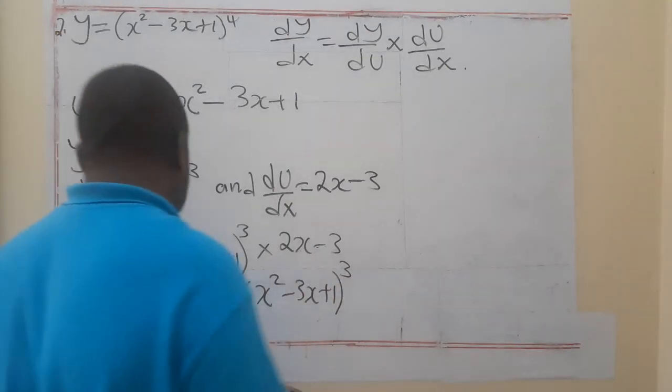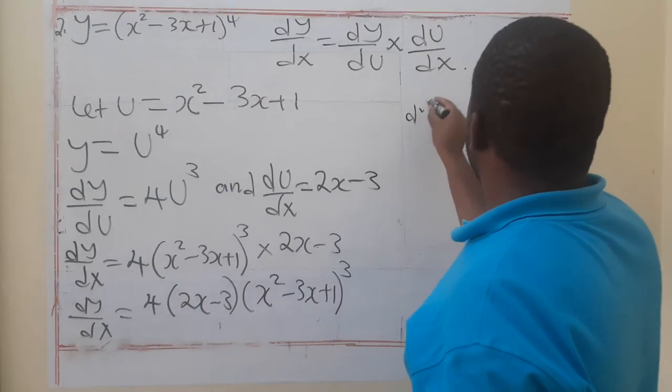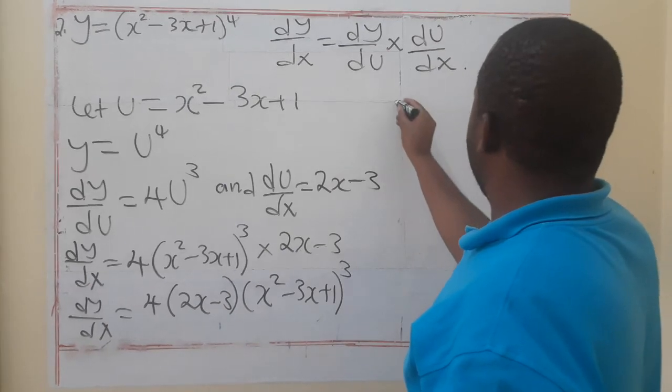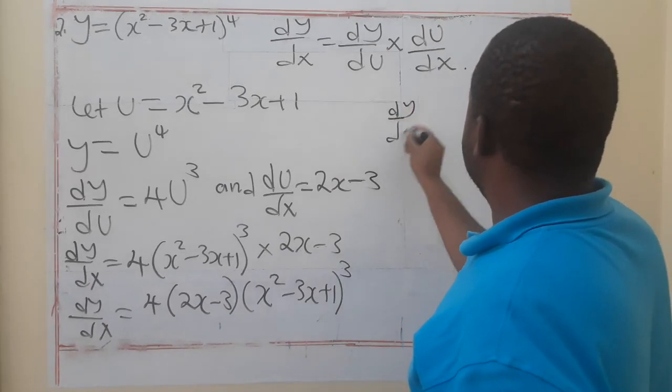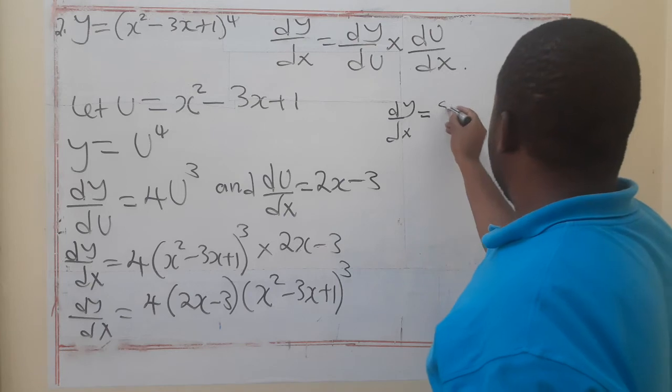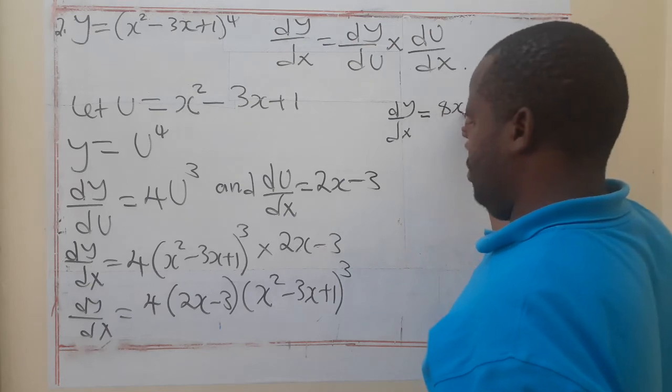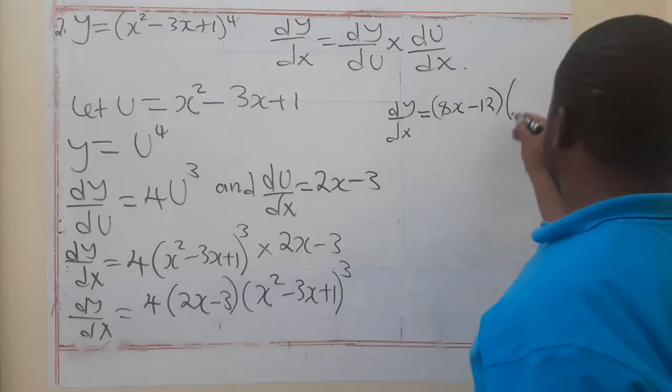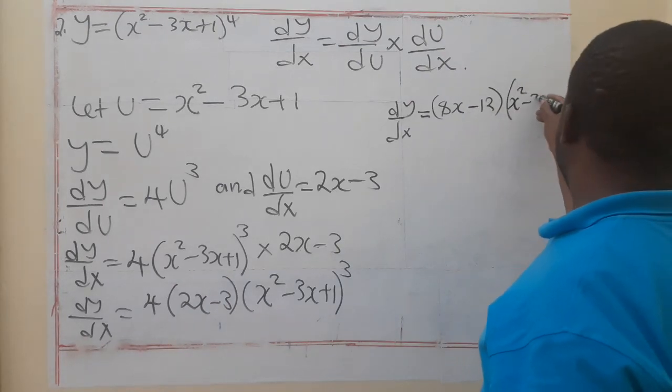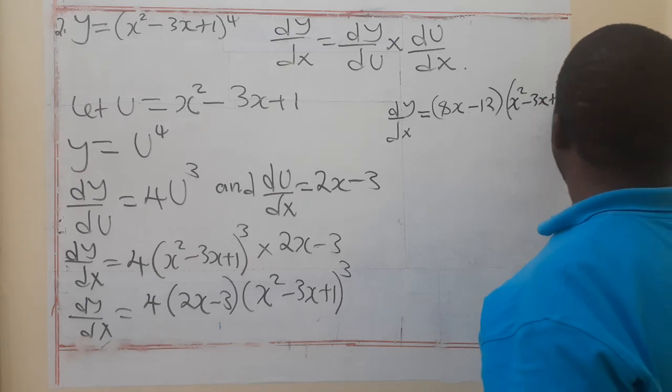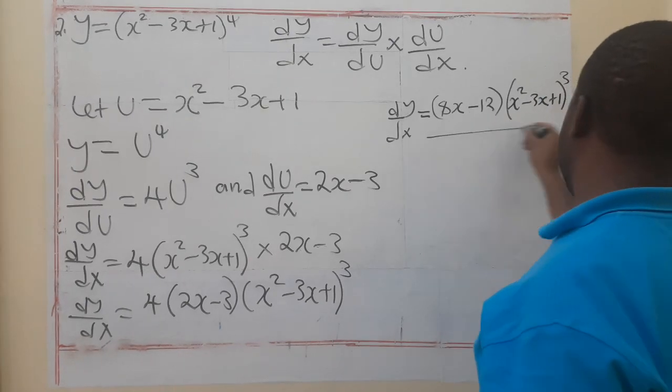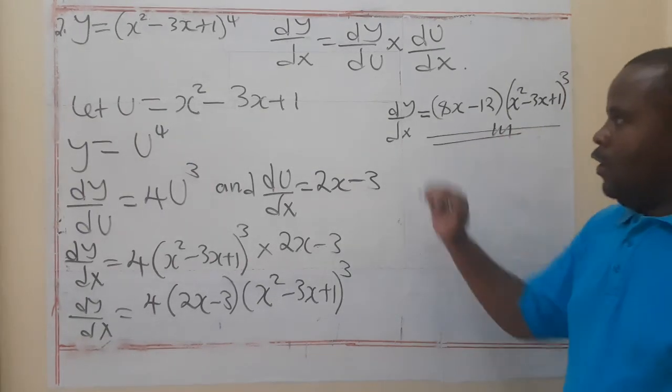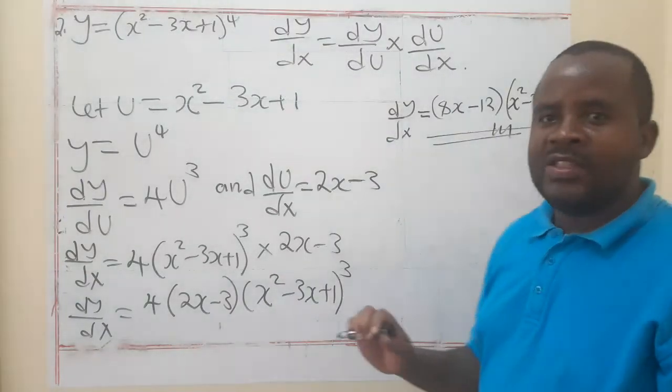That is fine, but we can still try to distribute that. So, we have dy/dx that is equal to 8x minus 12 open the bracket x to the power 2 minus 3x plus 1 to the power 3. And this is the gradient function of that problem. I hope it's okay.